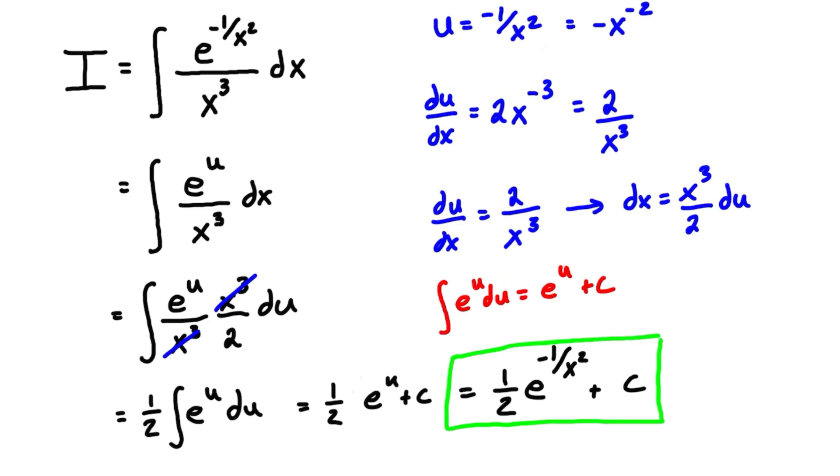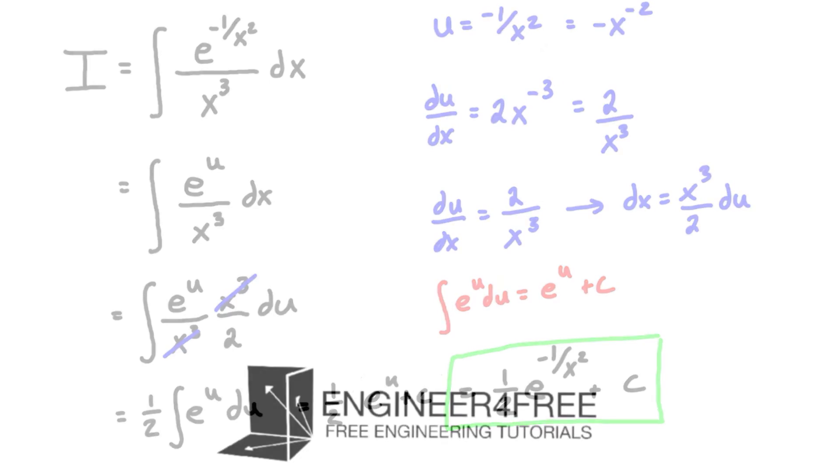You always want to make sure when you're doing these u substitution problems that you don't forget to go back into terms of x for the final solution, because we defined u and your professor, whoever gave you this problem, they didn't define u, you did. And if you give them back the answer in something that you defined, it's kind of not what they're looking for. So just always remember to go back. Basically these are the steps: find u, in the case of an exponential it's pretty much always going to be the exponent, take the derivative of it, isolate for dx, throw it all in, perform the integral, and then resubstitute u back in for that original function of x, and then you're going to have your solution. So hopefully that was helpful, and I will see you in the next one.